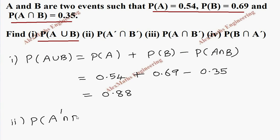This is using De Morgan's law: P of A union B whole dash. Again, we can rewrite this as 1 minus P of A union B. Already we got the value of A union B in the first substitution. By substitution we get 1 minus 0.88. After simplifying this we get 0.12.